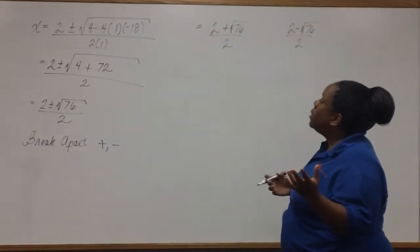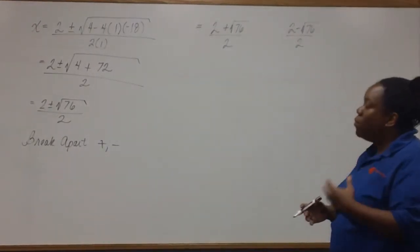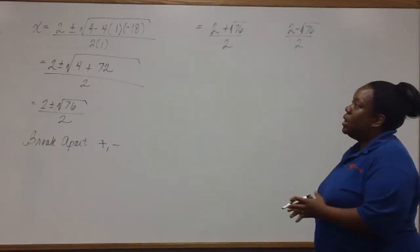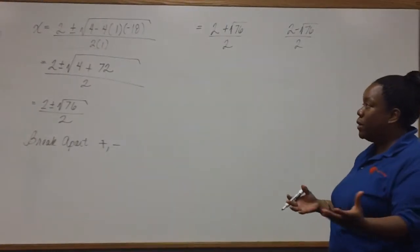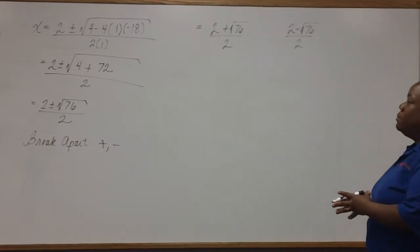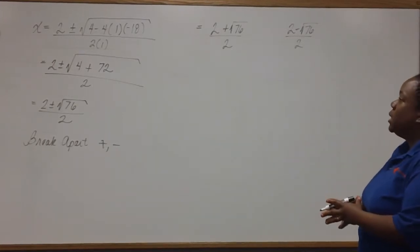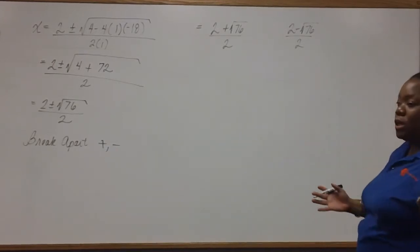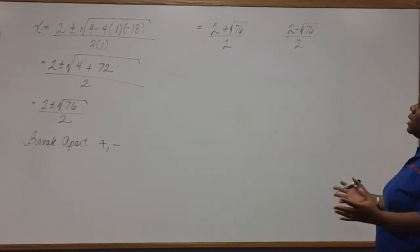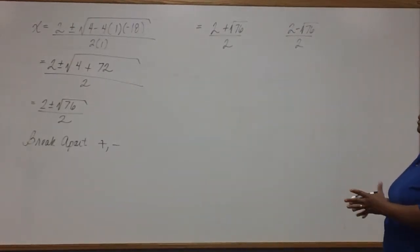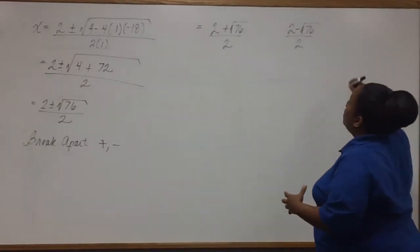Now remember, at this step, before you do anything, check to see if your square root is perfect. If you type in the square root of 76, you'll see that you'll get a decimal, which means that it is not a perfect square. So we have to see if it can be simplified.